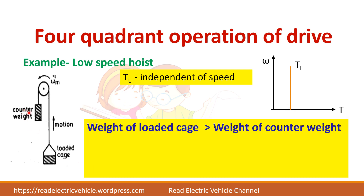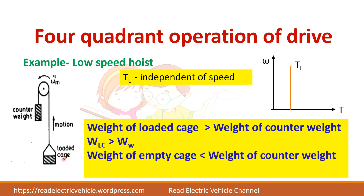Two conditions must be considered. First, when the cage is loaded, the weight of the loaded cage is greater than the weight of the counterweight. Second, when the cage is empty, the weight of the counterweight is greater than the weight of the empty cage. We analyze the four quadrant drive operation under these two conditions.